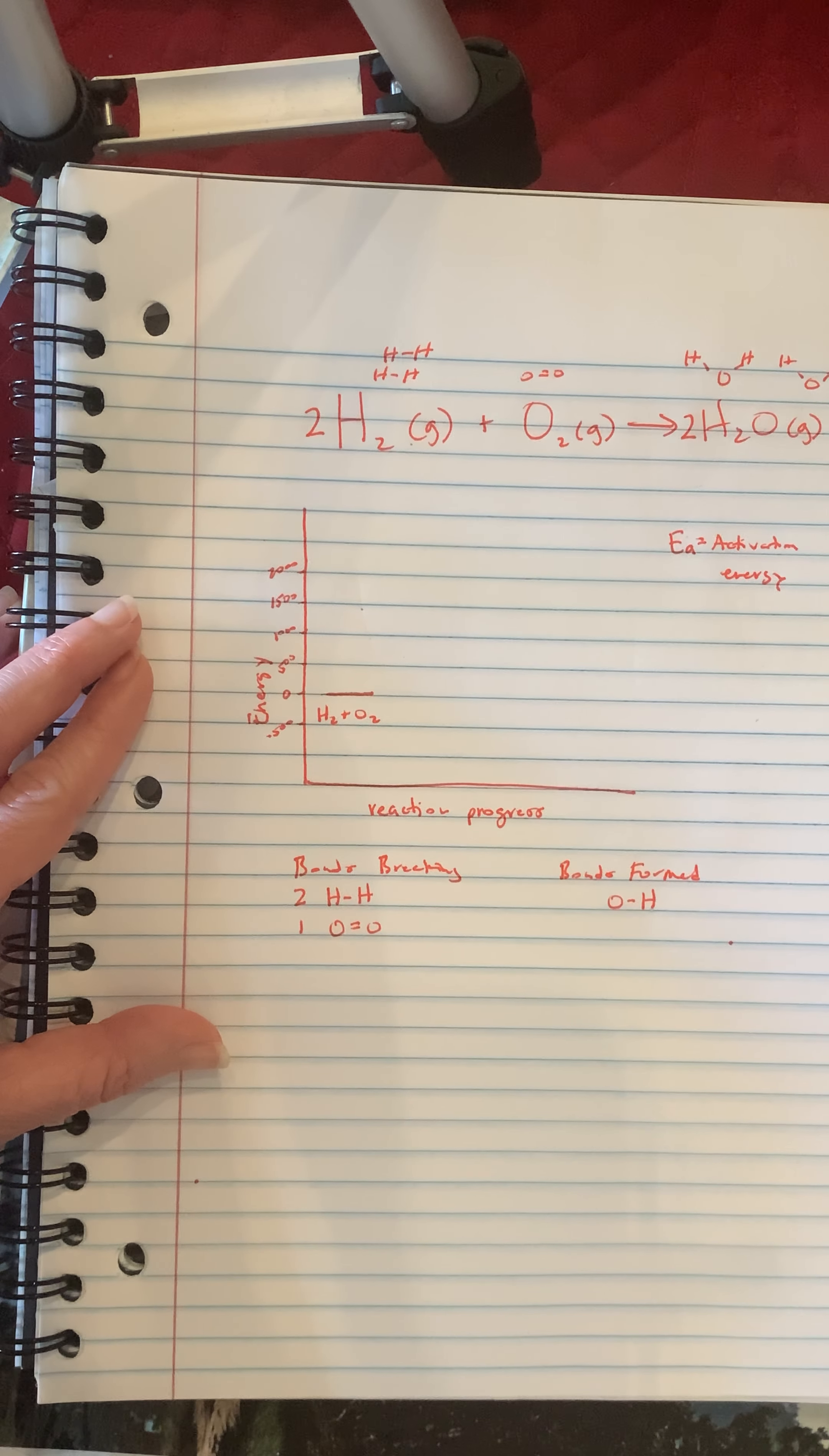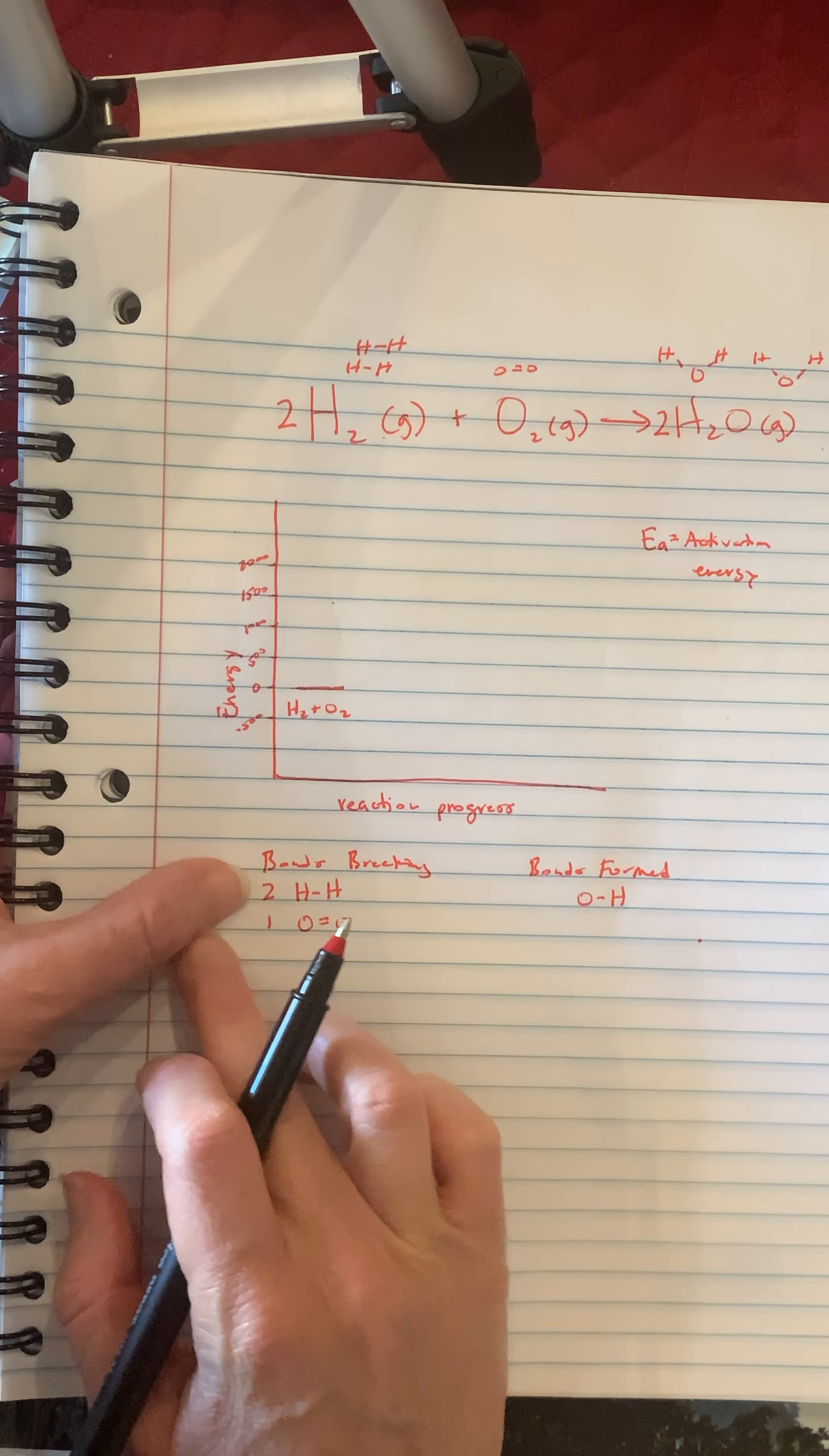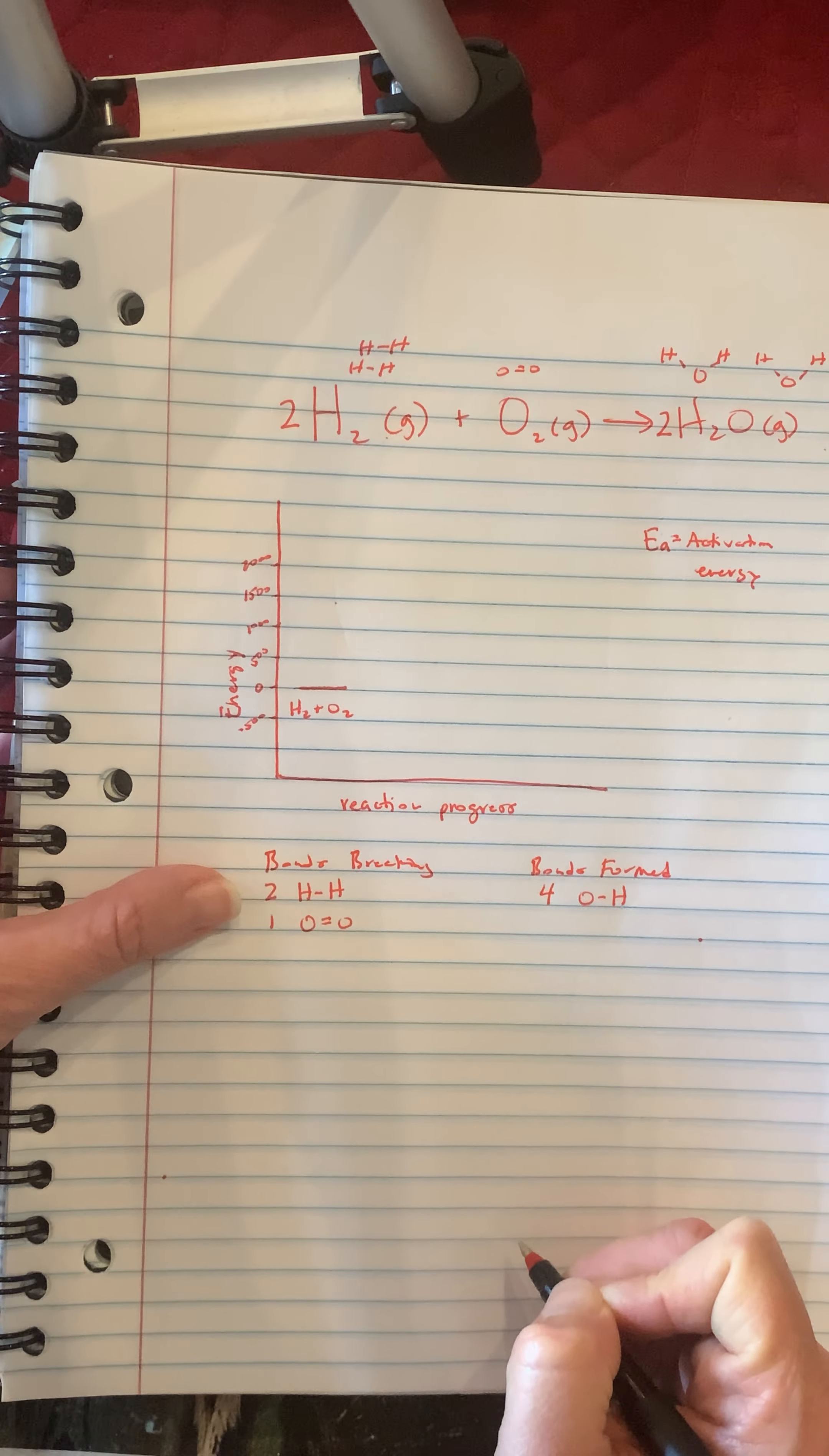And every time we break a bond it's going to be an endothermic process so you have to put in energy here. We're going to get energy back out over here when we make our new bonds. Okay, so four of these are formed.